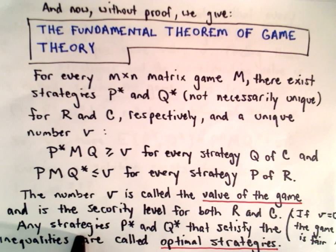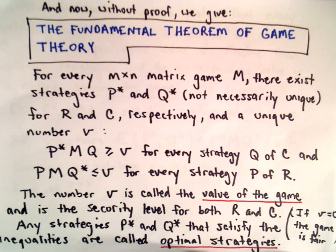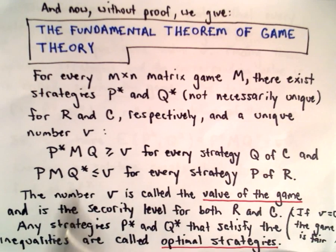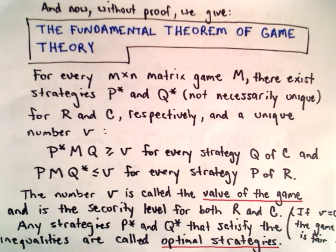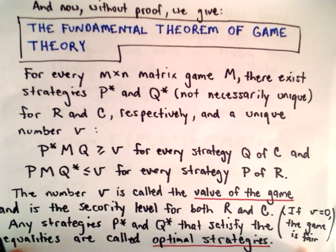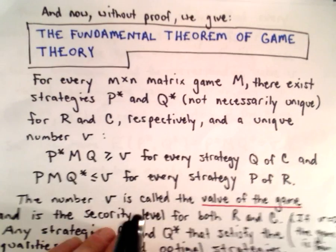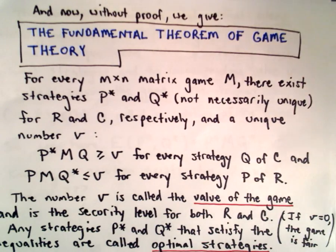So any strategies P* and Q* that satisfy these inequalities are what are known as optimal strategies. So if you can satisfy these inequalities, you're playing the best strategies. And if the value of the game equals zero, well then we say the game is fair. So a second ago, our expected value, again, was negative 15 cents per game. That doesn't mean that the game's not fair, because again, we haven't necessarily found the optimal strategies yet.